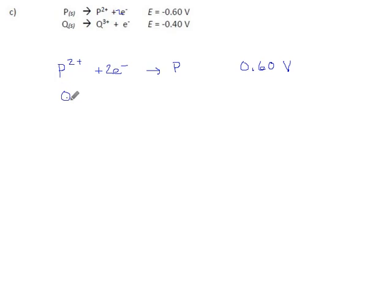Flip this one the same way, Q3+ plus, that should be three electrons, converts into Q. We flip this one, so now this should only be 0.40 volts, and now we have something that looks more like our data book. It's in descending order of voltage, and these reactions are both reductions.